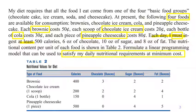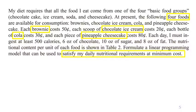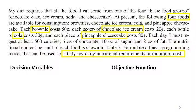I would like you to pause the video and read this problem carefully. Let's start formulating this problem into a linear programming problem. Sometimes I start from the objective function because it's clearer that the objective is about achieving minimum cost, so we need to collect every single thing that talks about money. Each brownie costs 50 cents, each scoop of chocolate ice cream costs 20 cents, each bottle of cola costs 30 cents, and each piece of pineapple cheesecake costs 80 cents — all these must go into the objective function.